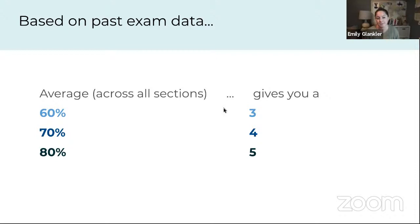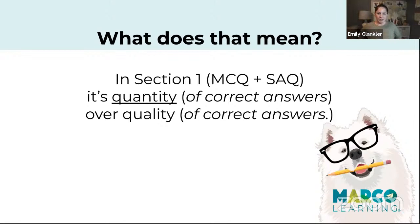What this means — especially in the first chunk of the test, the multiple choice and short answer — is that it's quantity over quality. It hurts to say it, but on the AP test for this first part it's better to get more answers right that are just okay rather than spending time making sure every point you get is amazing. That especially applies on the short answer question, but it also applies on the multiple choice.